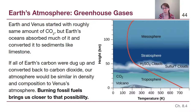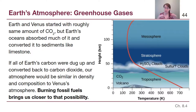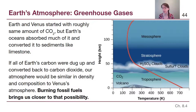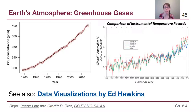Earth and Venus started with roughly the same amount of carbon dioxide, but Earth was able to collect a lot of water — mostly from comets, as we'll discuss later — to create surface oceans that absorbed the carbon dioxide and stored it in sediments. If all of Earth's carbon were dug back up and put into the atmosphere, we would look very similar to Venus, which has a runaway greenhouse effect. Burning fossil fuels brings us closer and closer to that possibility, especially without large-scale public policy to deal with it.